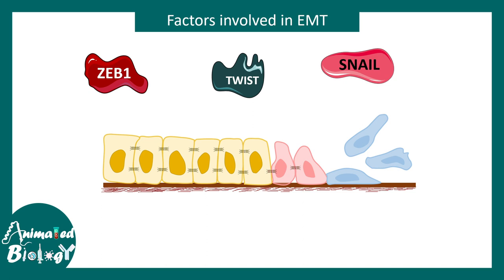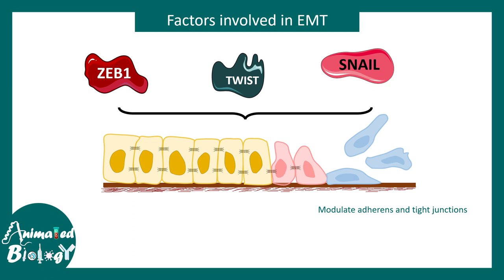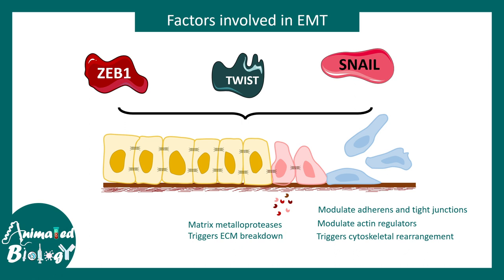There are hallmark transcription factors that trigger the EMT response, such as ZEB1, Twist, and Snail — these are characteristic transcription factors upregulated during EMT. In experiments where scientists upregulated these transcription factors in epithelial cells, those cells became transformed into mesenchymal cells. These factors modulate adherens junctions and tight junctions, regulate actins, trigger cytoskeletal rearrangement, and most importantly lead to production of matrix metalloproteinases, which dissolve the extracellular matrix and allow cells to delaminate from the basal lamina.